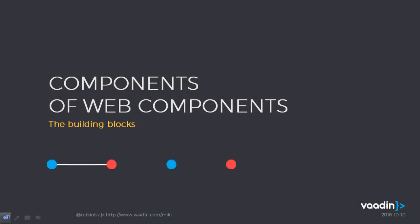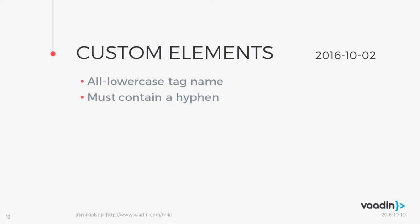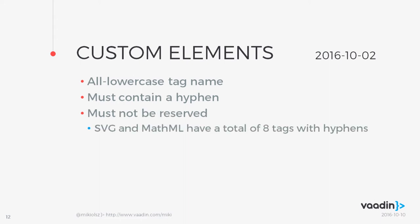Let's go into details about custom elements. The date in the upper right corner is the latest revision of the W3C Consortium draft — it's an evolving topic with numerous changes affecting implementations. A custom element is whatever you put into tag markers that is not defined in the HTML standard. By definition, it should be all lowercase, must contain a hyphen or dash to distinguish it from standard names, and must not be reserved. There are eight tags defined by SVG and MathML that contain dashes which you can't use, but you'll most likely never come across those names.